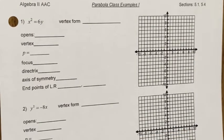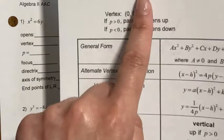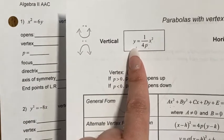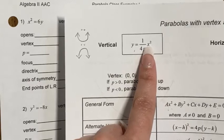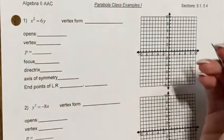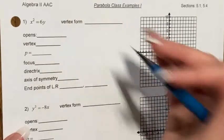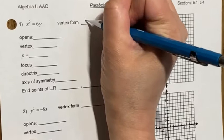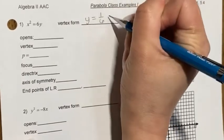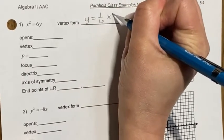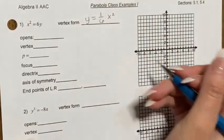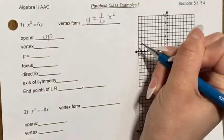Example: x² = 6y. We want the vertex form, which is y = (1/4p)x². This equation isn't in that form yet, so divide both sides by 6 to get y = (1/6)x². Since 1/6 is positive, the parabola opens up.